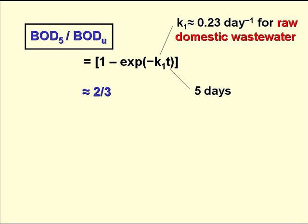The ratio BOD5 to BODU, or Y5 over L0, is given by Y5 over L0 equals 1 minus e to the minus K1 times 5. For normal untreated domestic or municipal wastewater, K1 is about 0.23 reciprocal day, so the ratio is about two-thirds. We normally measure BOD5, so we know that the ultimate BOD will be about one-and-a-half times the five-day BOD.